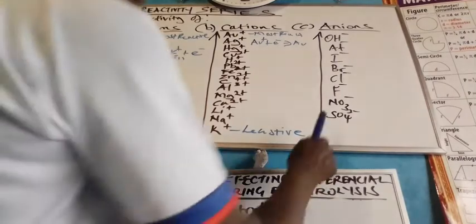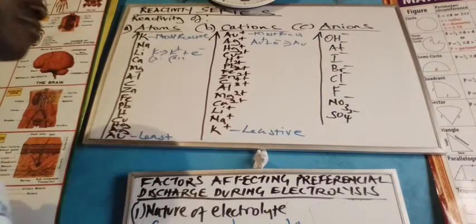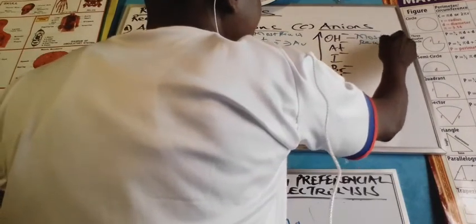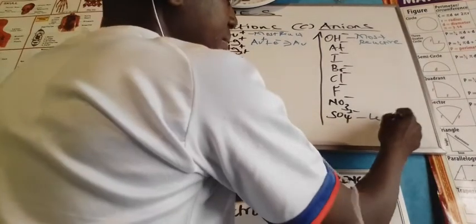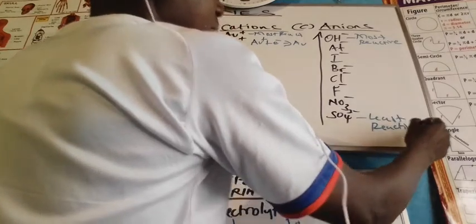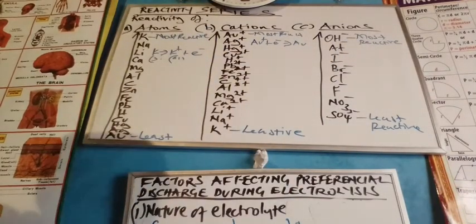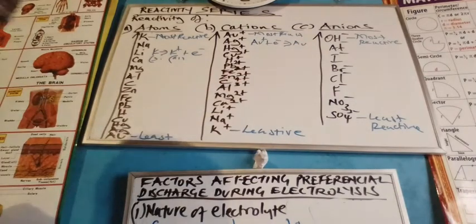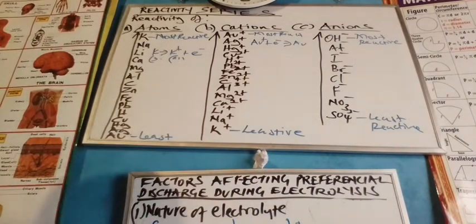The third series represents the reactivity of anions. Anions are the negatively charged species. The most reactive of them is the hydroxyl ion. The least reactive are the sulfate ions. The intermediate ions are those of group 7 or halogens in the reverse sequence starting with astatine, then iodine, then bromine, then chlorine, then fluorine. After the halogens, we have the nitrate ions, and finally the sulfate ions. That is the reactivity of anions.